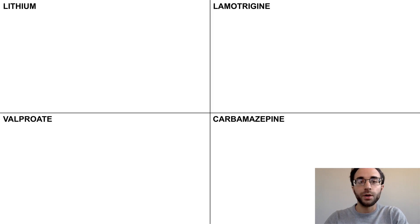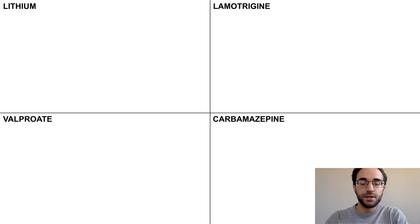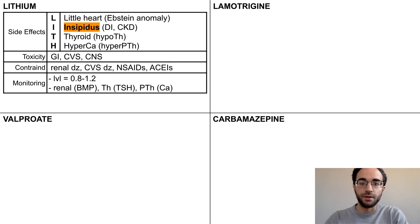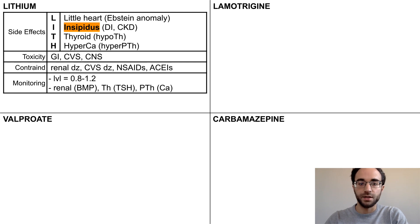Some of the more common mood stabilizers used in clinical practice are lithium, lamotrigine, valproate, and carbamazepine, so I'll focus on them. Lithium's side effects include Ebstein anomaly, a potential teratogenic cardiac abnormality, diabetes insipidus, and renal toxicity overall, hypothyroidism, and hypercalcemia as a result of hyperparathyroidism.